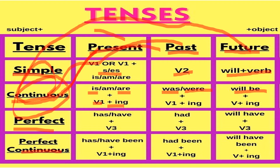Next is present perfect tense. This tense is used when the work has finished just now. With singular we use 'has,' with plural we use 'have,' plus the third form of the verb. The third form of 'go' is 'gone'; 'eat, ate, eaten' — 'eaten' is the third form; 'drink, drank, drunk' — 'drunk' is the third form. So with present perfect tense we use has/have plus the third form of the verb.